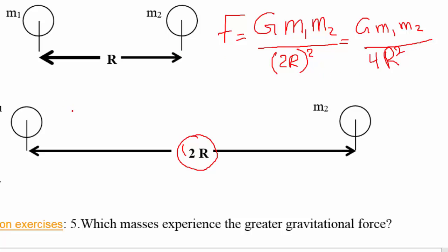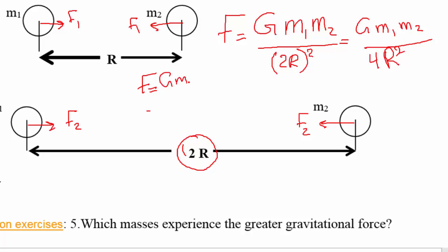So you can see the force has decreased. Comparing f2 — the force of attraction at distance 2r — to f1 when the distance was r: the force of gravity is action and reaction, it's a mutual force between the two masses. The force decreased from G·m1·m2 / r² to G·m1·m2 / 4r².